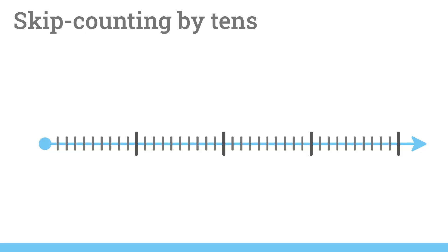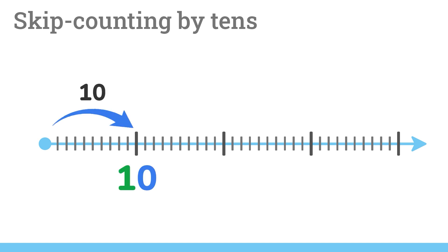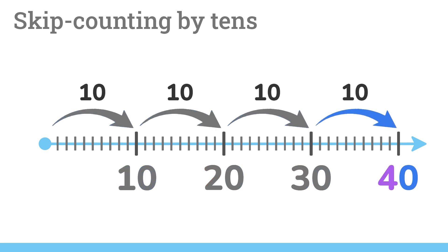We can also skip count by tens. This time, we skip ahead 10 at a time. The pattern goes like this: 10, 20, 30, 40. Notice that every number ends in a 0.